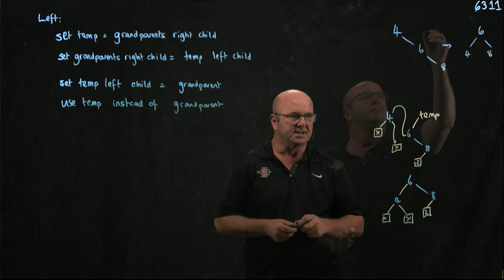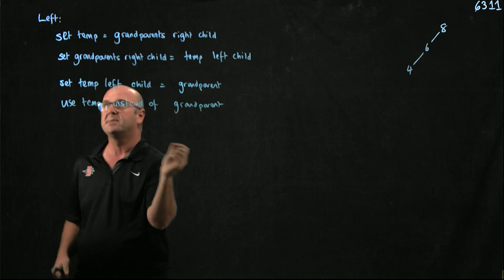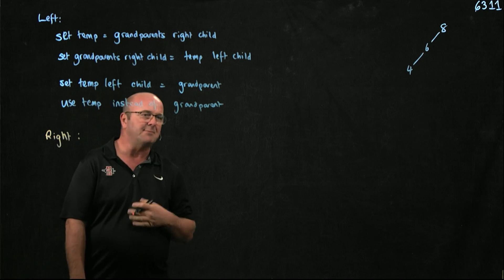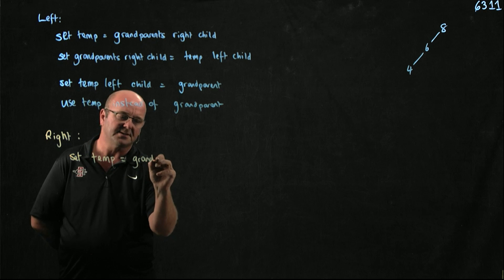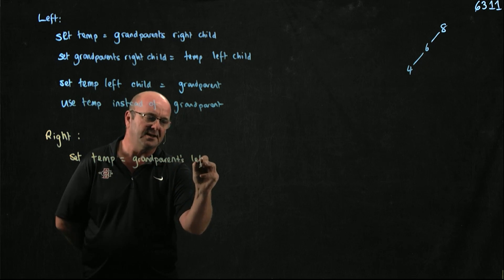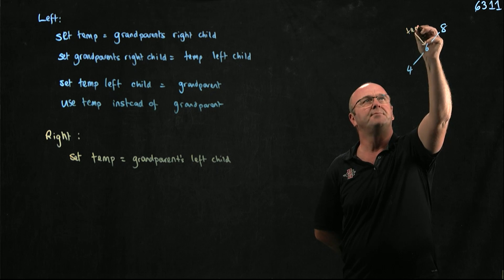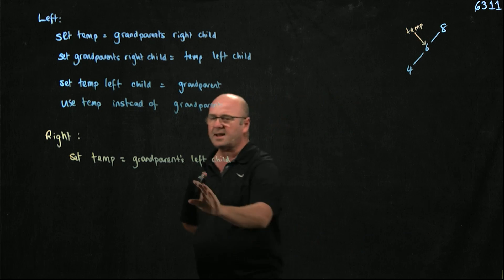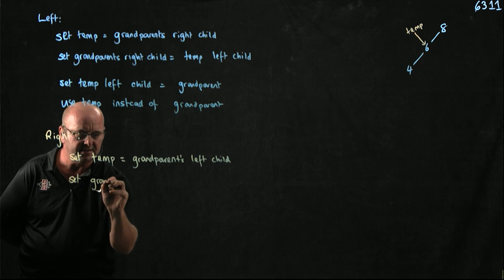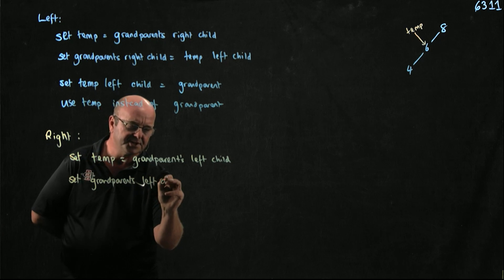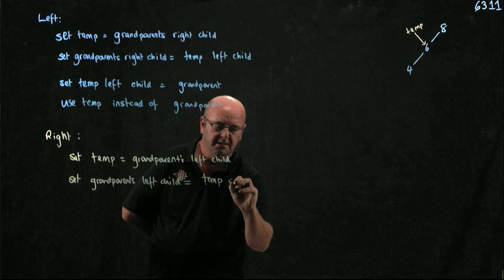Now let's take a look at a right rotation. For a right rotation it's basically the same idea but slightly different. We also have a temporary pointer and we set it equal to the grandparent's left child. Now that we've set something pointing to that left child, we can overwrite it — we set the grandparent's left child equal to the temporary pointer's right child.